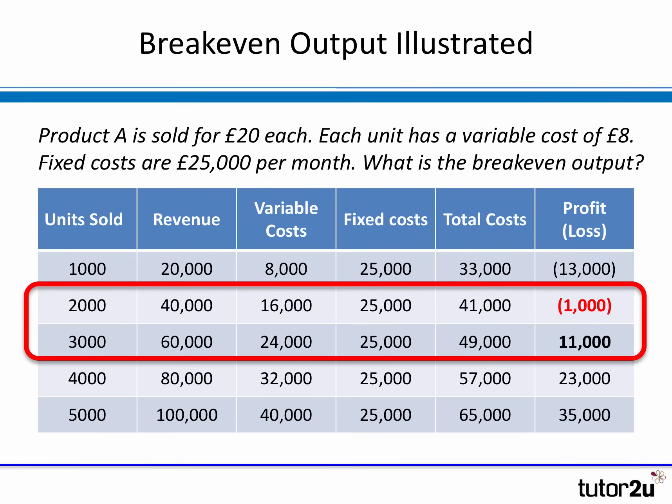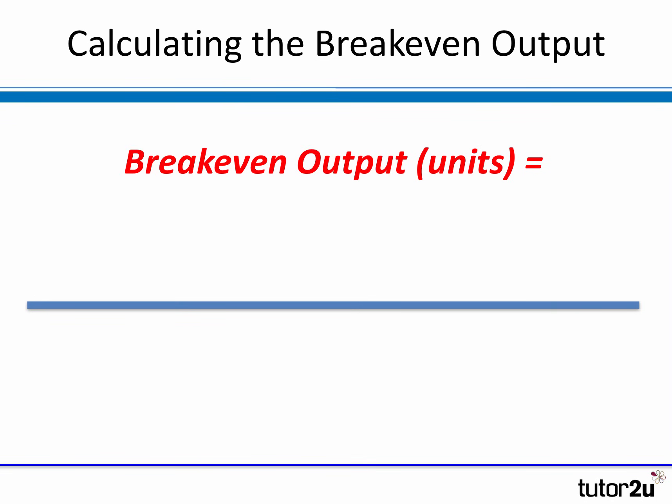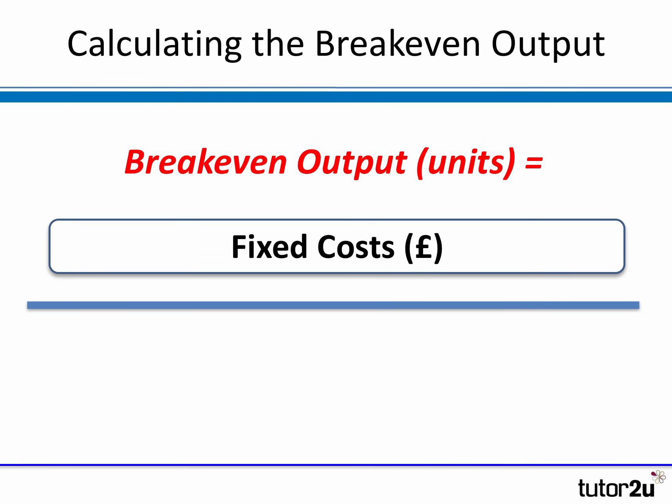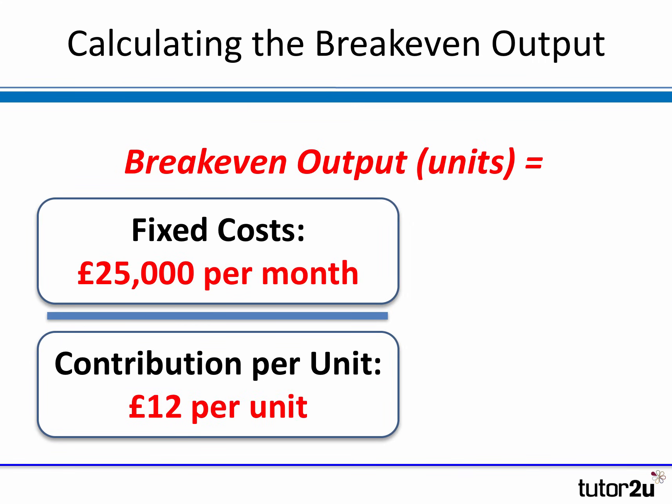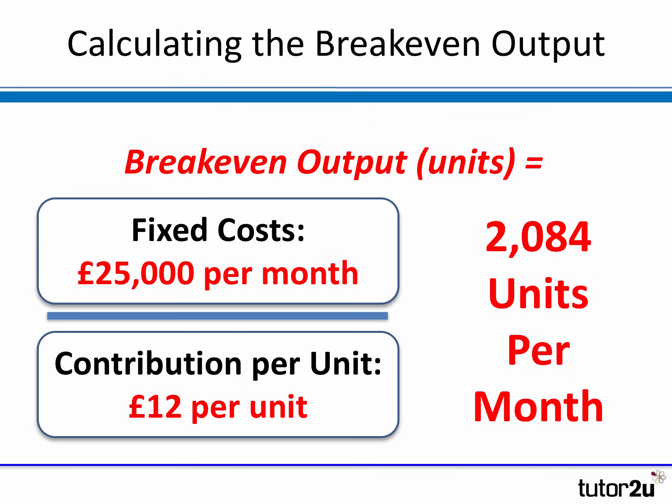Somewhere between 2,000 and 3,000 units sold is the break-even output. There's a very useful formula: to calculate the break-even output you divide fixed costs by the contribution per unit — perhaps the most important formula in break-even analysis. In our case, fixed costs are £25,000 and contribution per unit is £20 revenue less £8 variable cost = £12. So we need to sell 2,084 units per month to reach break-even output.